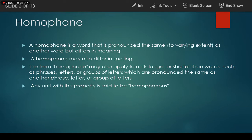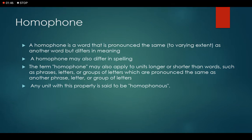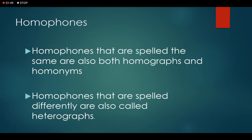Such units include phrases, letters, or groups of letters which are pronounced the same as another phrase, letter, or group of letters. Any unit with this property is said to be homophones. Homophones that are spelled the same — like 'rose' (r-o-s-e) meaning flower, or 'rose' the past tense of 'rise' — are both homographs and homonyms.